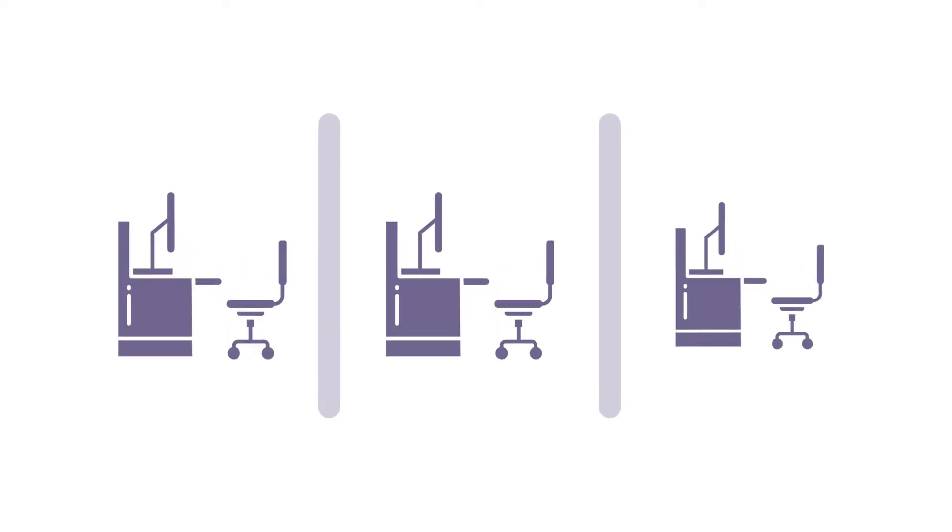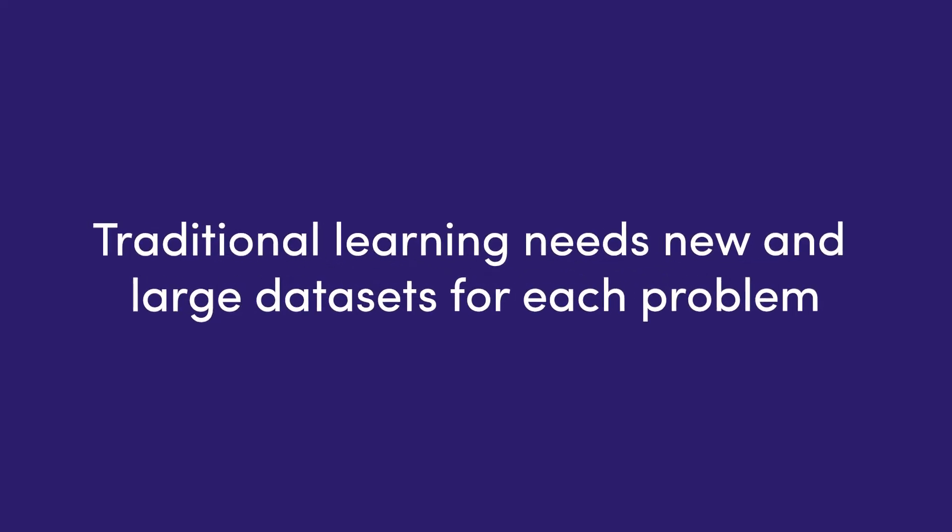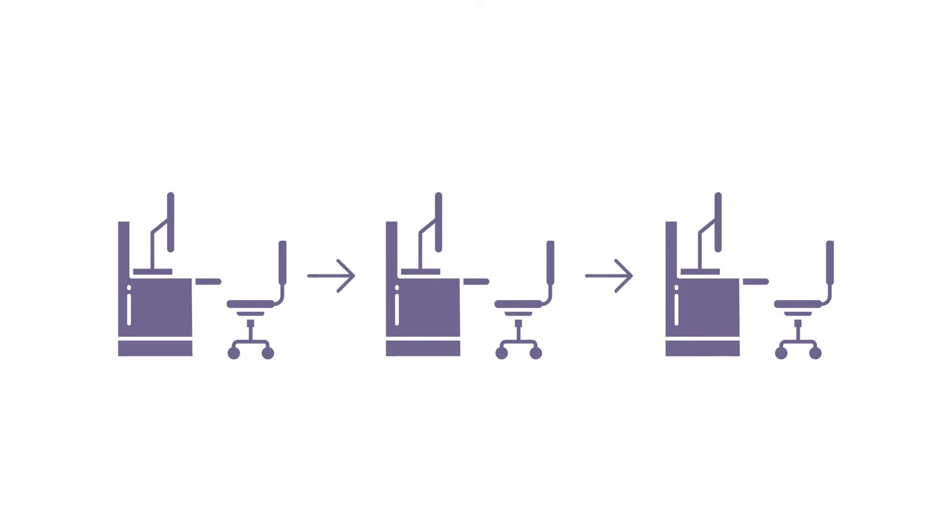Before transfer learning, traditional learning meant that machines learned in isolation. Once a machine was given a large enough dataset it learned how to perform a specific task, but when faced with a new problem it cannot resort to any previously gained knowledge — a conventional algorithm needs a second dataset to begin a new learning process. In transfer learning, the learning of new tasks relies on previously learned tasks; the algorithm can store and access this knowledge, making the model general instead of specific.